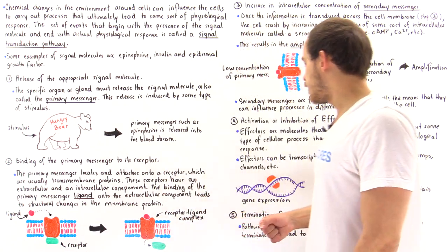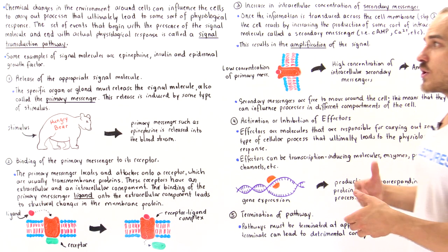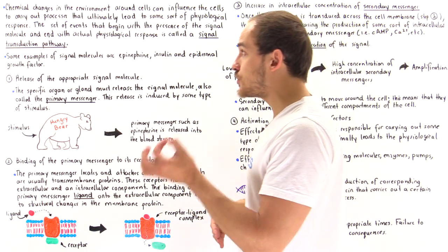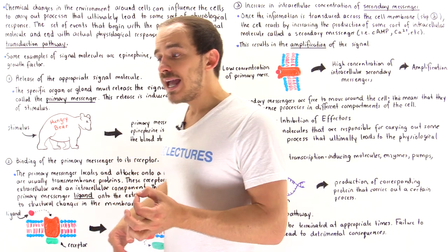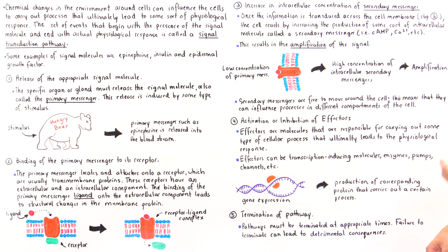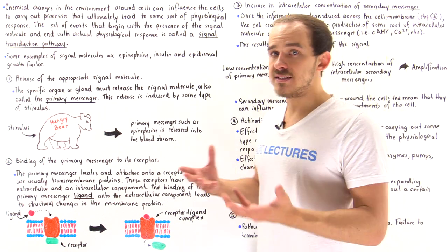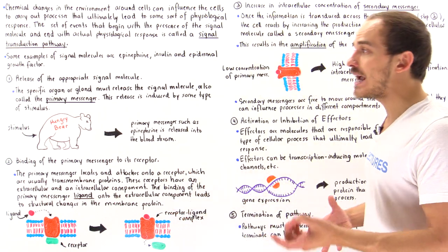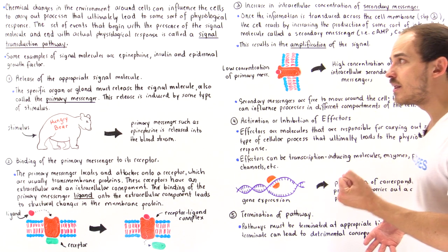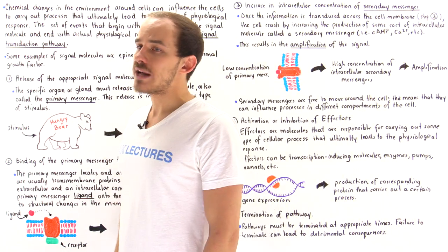The final step in the signal transduction pathway is to terminate that pathway. It's very important that we terminate the pathway at the proper time, because if we can't terminate it, that can lead to very negative, detrimental effects. In fact, certain cancers are a result of the inability of our body to effectively terminate signal transduction pathways — something we'll explore in a lecture to come.